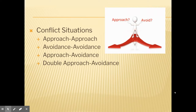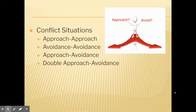An approach-avoidance conflict situation is one where we don't know the potential outcome of our choices. For example, if I go to school late, will I feel more relaxed, or will I get in trouble with my parents? Because we don't know, it becomes a conflict situation.